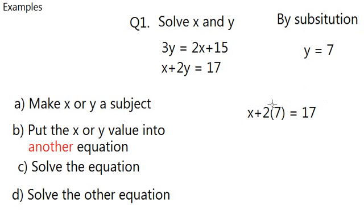Okay, so let us simplify the whole thing. So, x plus 14 equals 17. Then x is 17 minus 14, which is 3. So, now we have y equals 7, x equals 3. And that is the answer to this simultaneous equation.